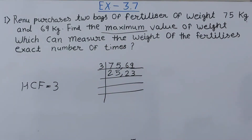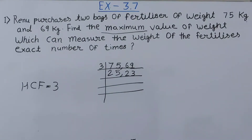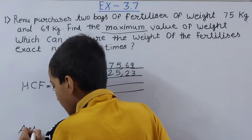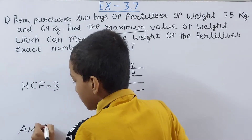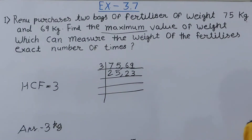We have got only one common divisor, which is 3, so the HCF will be 3. Since a unit is given, the answer will be 3 kg. The maximum weight that can measure both bags an exact number of times is 3 kg.